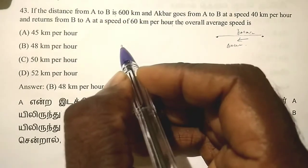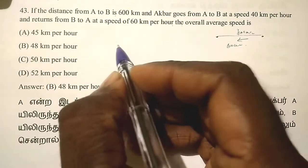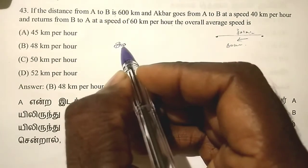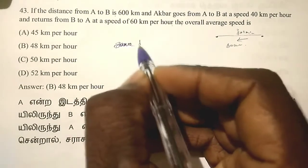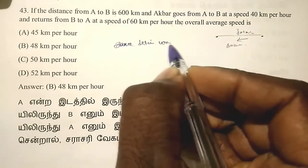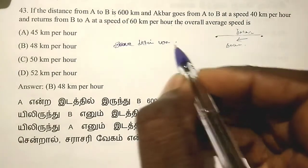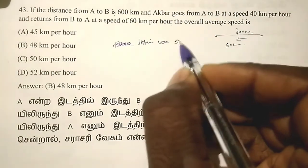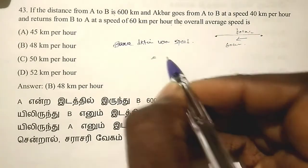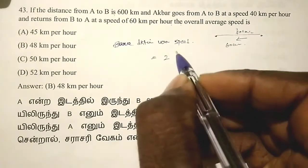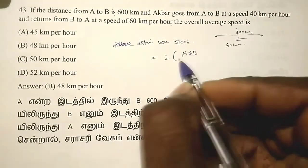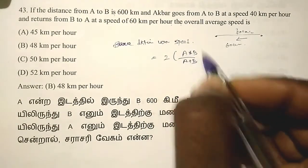It's very simple. Same distance, various places, various speeds — for this the formula is: 2 into A into B divided by A plus B. Use this formula.